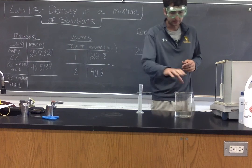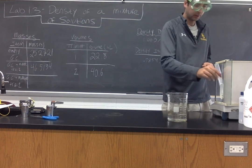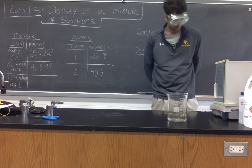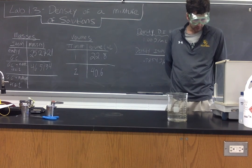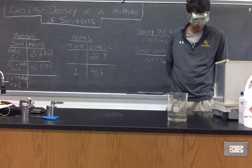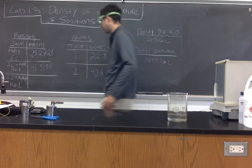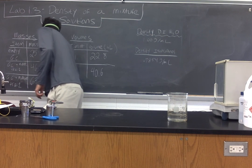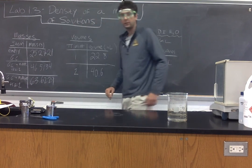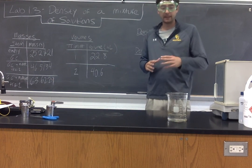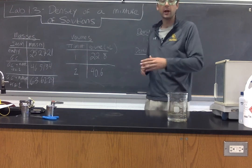Okay, so our second trial, getting down to eye level here, I'm seeing at about 40.6 milliliters. Now let's take our second mass. 63.6229 grams. At this point, ladies and gentlemen, we have enough information to solve for the density of our mixture in both trial one and trial two, as well as to find the percent breakdown of the mixture.